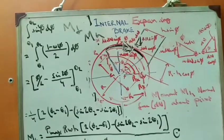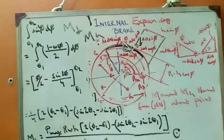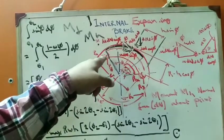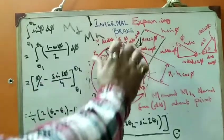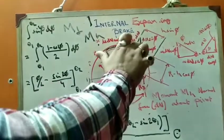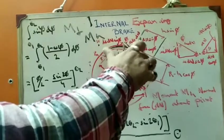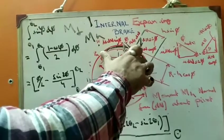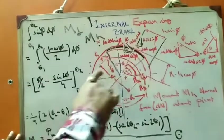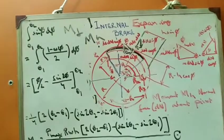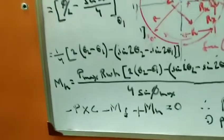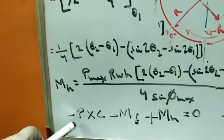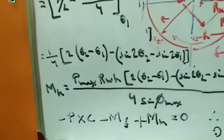Now considering the forces acting on the drum: the applied force P moves the shoe in the clockwise direction. So the moment P times C is taken as negative (clockwise). The frictional force mu*dn is also acting in the clockwise direction, so Mf is also negative. Therefore, minus Mf is used in the equilibrium equation.